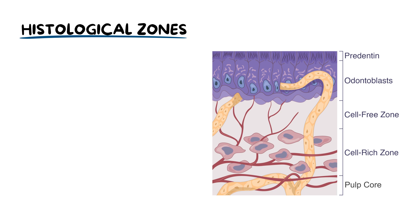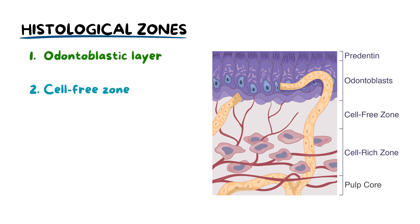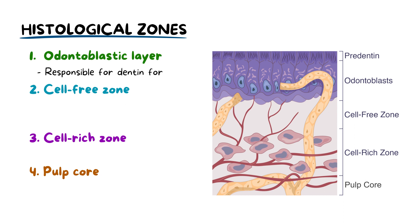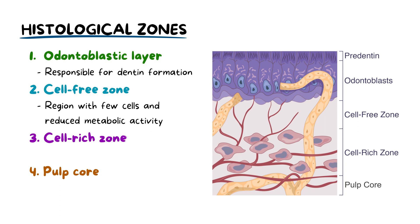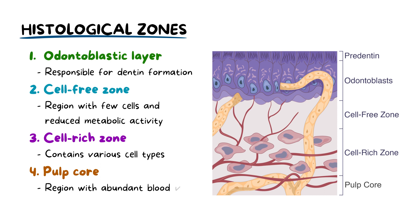Now let's zoom in a little bit closer to explore the histological composition of the dental pulp. It can be divided into different histological zones, starting from the periphery and moving inwards. These zones include the odontoblast layer, cell-free zone, cell-rich zone and the pulp core. The odontoblast layer contains odontoblasts, which are responsible for dentine formation. The cell-free zone is a region with very few cells and reduced metabolic activity. The cell-rich zone contains various cell types, including fibroblasts and immune cells. The pulp core is a central region with abundant blood vessels and nerve fibers.